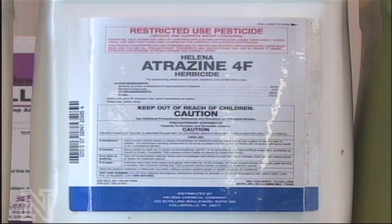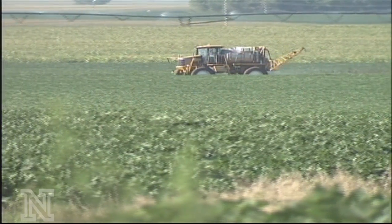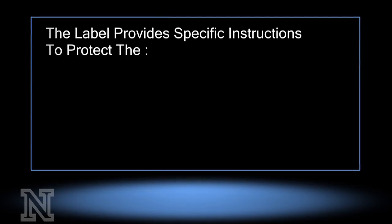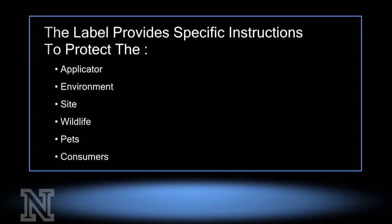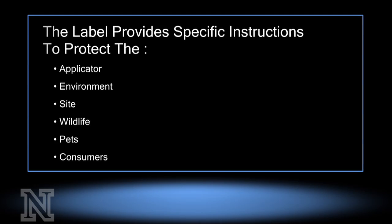Once the pesticide label is approved by EPA, Nebraska will register the product and then it is available for sale and use. The label is important because it provides specific instructions to protect the applicator, environment, site, wildlife, pets, and consumers. Remember that the label is the law.